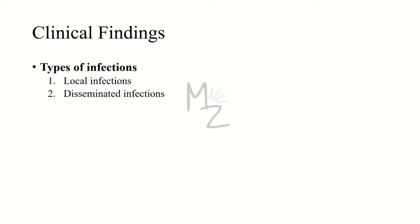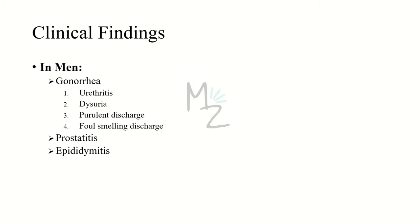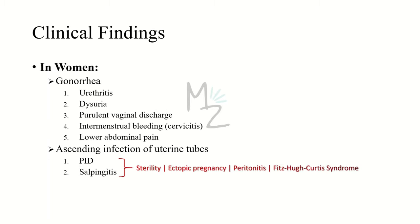Clinical findings: gonococcus causes both localized infections, usually in the genital tract, and disseminated infections with seeding of various organs. When gonococcus reaches different organs via blood, it is termed gonococcal bacteremia. Gonorrhea is usually symptomatic in men but often asymptomatic in women, though women can act as carriers. In men, it is characterized primarily by urethritis, pain during urination (dysuria), and purulent or foul-smelling discharge, with possible complications like prostatitis or epididymitis. In women, infection is located primarily in the endocervix, causing purulent vaginal discharge, inter-menstrual bleeding, cervicitis, urethritis, dysuria, and lower abdominal pain.